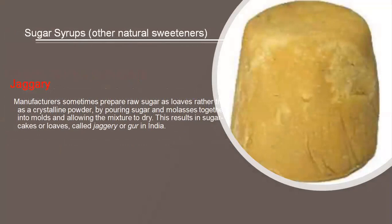Next is jaggery. Manufacturers sometimes prepare raw sugar as loaves rather than as a crystalline powder by pouring sugar and molasses together into molds and allowing the mixture to dry. This results in sugar cakes or loaves called jaggery or gur in India. Nowadays people are using more jaggery instead of white sugar. It has a lot of health benefits and is a very iron-rich product which gives nutrients.